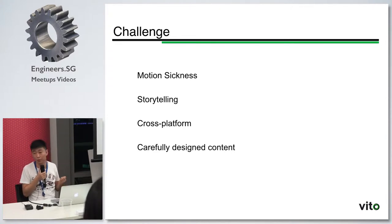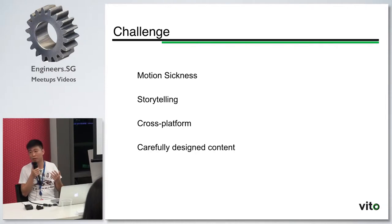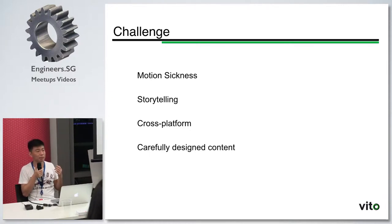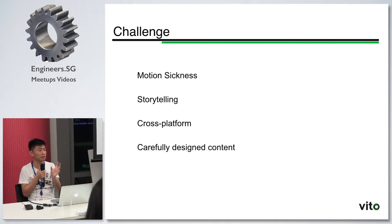Another challenge is storytelling. In VR, users can control their view angle and direction. Maybe something is happening in one direction, but the user gets attracted to another thing — so they may miss some important stuff. During our game, I introduced something called the ISAT trigger event, so as long as users don't look in the required direction, this event won't happen. And another challenge is multi-platform.